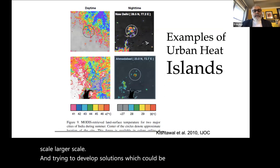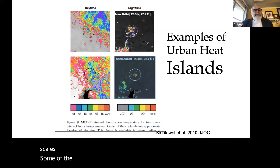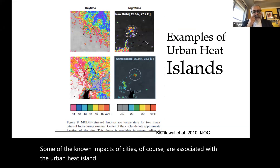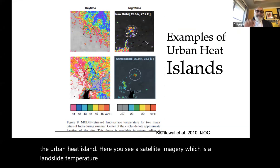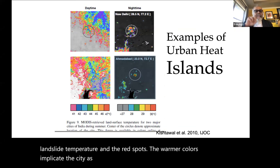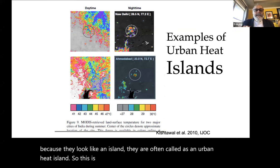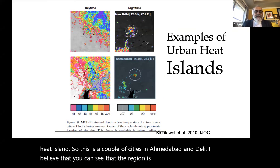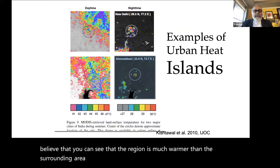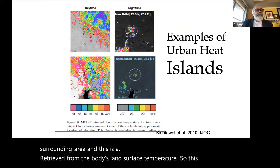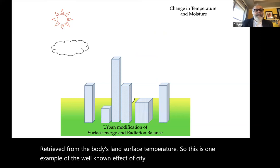Some well-known impacts of cities are associated with the urban heat island. In a Landsat temperature satellite image, the warmer colors implicate the city as being warmer than surrounding areas — hence 'urban heat island.' Here you can see cities like Ahmedabad and Delhi retrieved from MODIS land surface temperature, clearly warmer than surrounding areas.